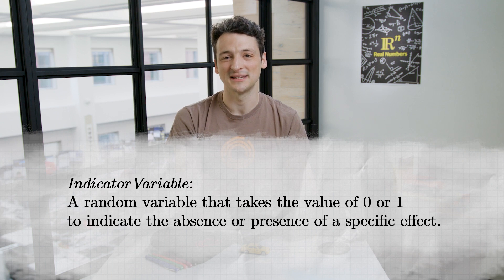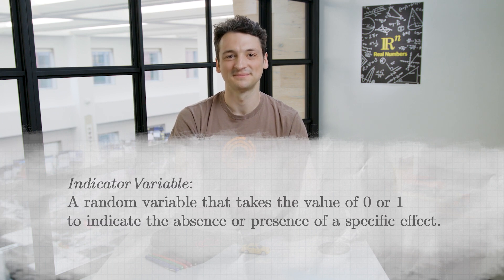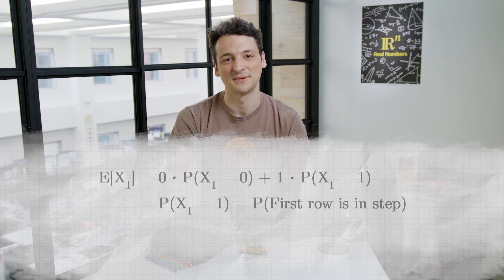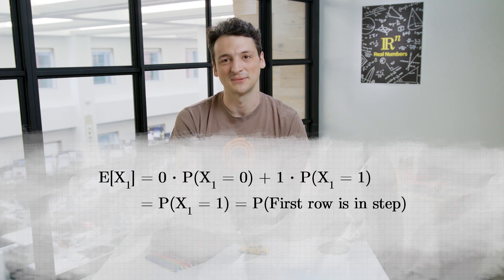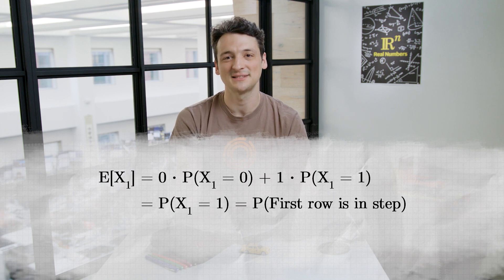So, let's compute the expected value of x sub 1. The expected value of an indicator variable is always just the probability the condition occurs, since, for example, the expected value of x sub 1 equals 0 times the probability x sub 1 equals 0, plus 1 times the probability x sub 1 equals 1, that's just the probability x sub 1 equals 1, or the probability that the first row is instep.